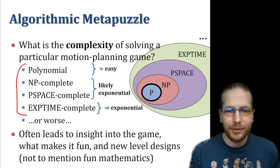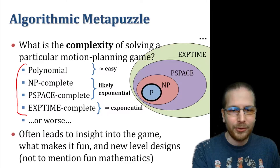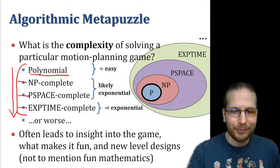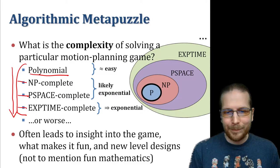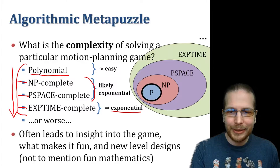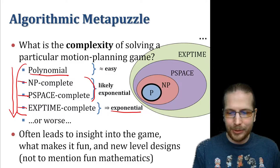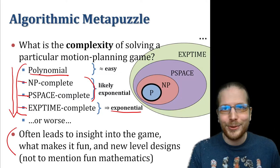In the computational complexity world, we have different complexity classes. Polynomial is the good case where things are easy. NP-completeness is the next level up. PSPACE-completeness is next. And EXPTIME-completeness is the biggest level we'll discuss. At EXPTIME, we know the problem needs exponential time. In between, probably it also requires exponential time, but there are technical differences. We like to do this to understand the difficulty of these games, and it can lead to new level designs.